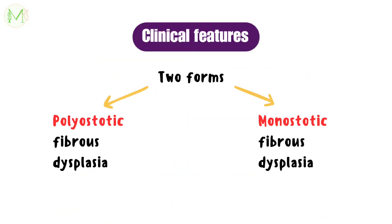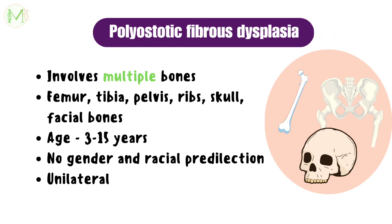Fibrous dysplasia exists in two forms: polyostotic and monostotic. Polyostotic fibrous dysplasia affects multiple bones like femur, tibia, pelvis, ribs, skull, facial bones, etc. It mostly affects the 3–15 years old age group.